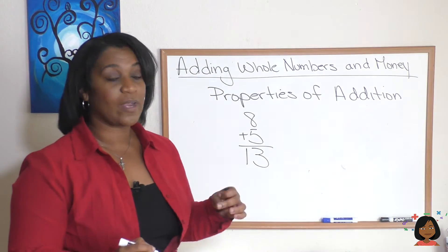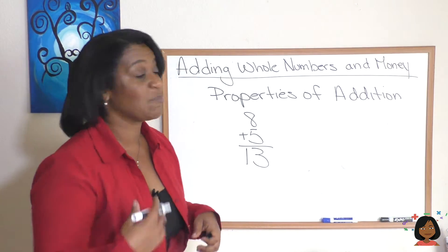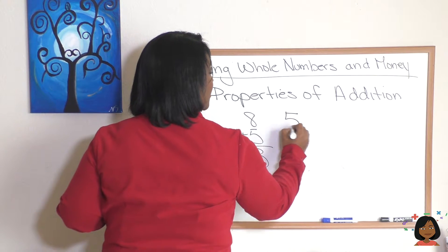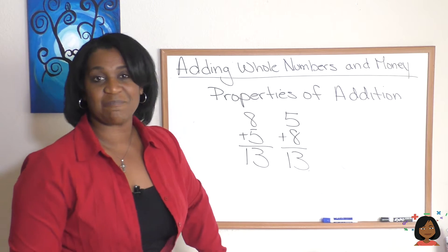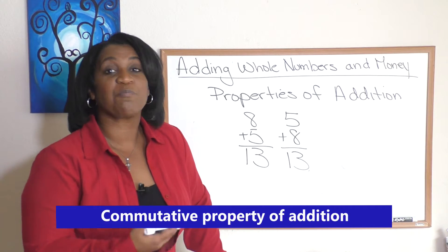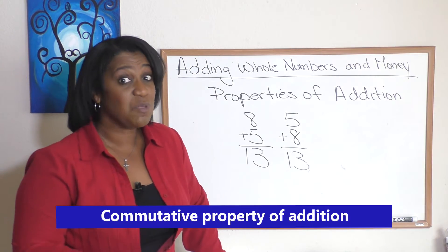But what if I decided I wanted to add 5 plus 8, so I'm starting with 5 this time and I'm adding 8? Well, that also equals 13. Well, in math this is a certain property that we call the commutative property of addition.